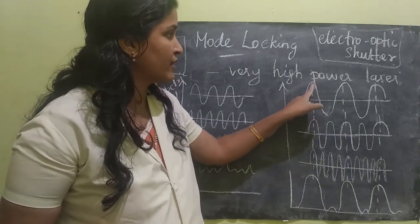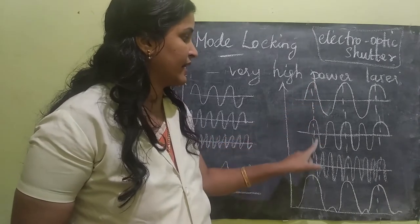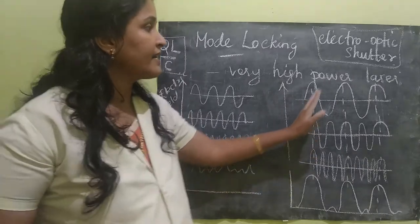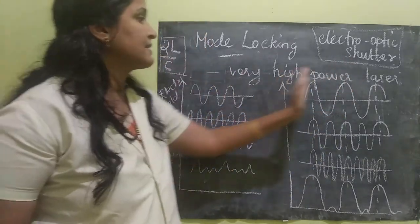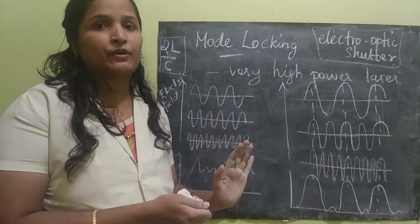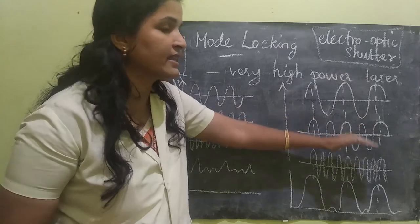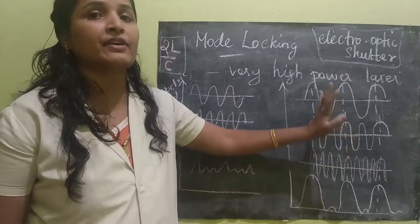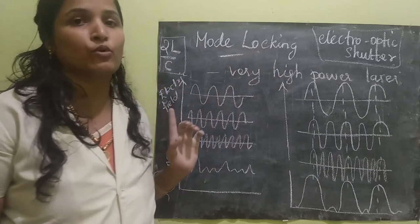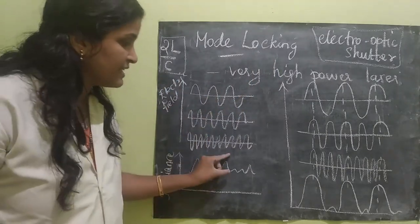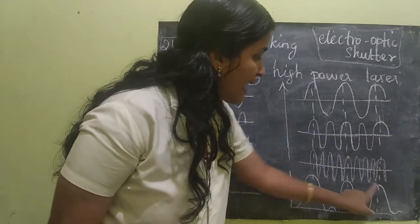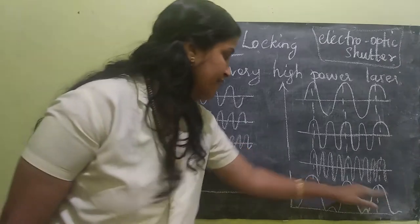See this example: the phase of the first waveform, second one, and third waveform will all be the same, so they will be allowed through the shutter. Every 2L/C seconds the shutter will be closed, and in this synchronized manner, at last when we sum up all these waveforms, we will get an irradiance which is very, very high. Without mode locking, the power is very small and fluctuating. But with mode locking, every 2L/C seconds the power is very high — the peak will be very, very high compared to the average.